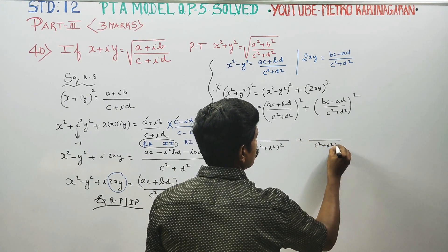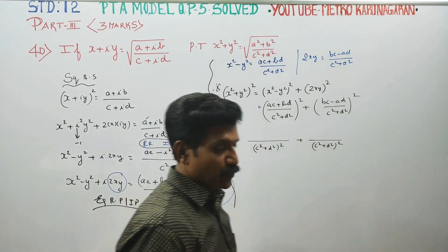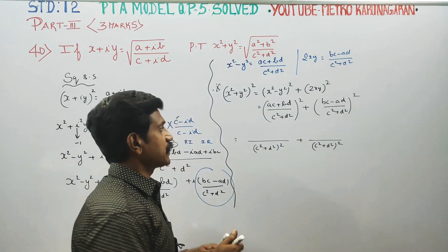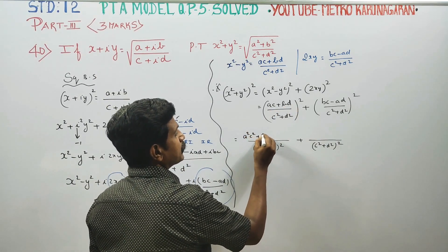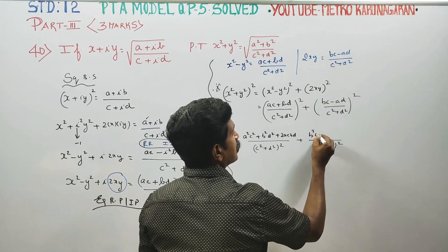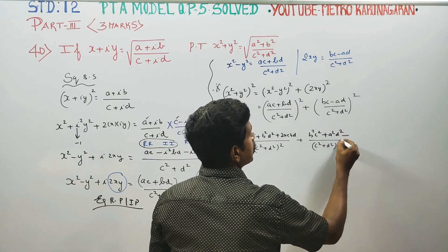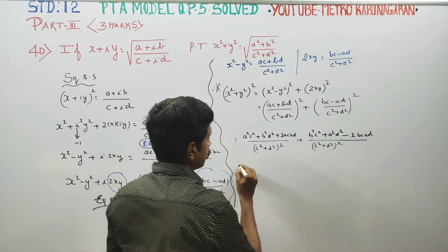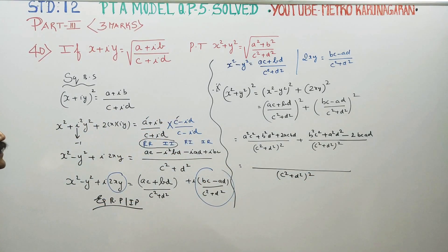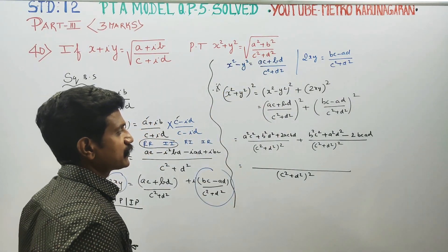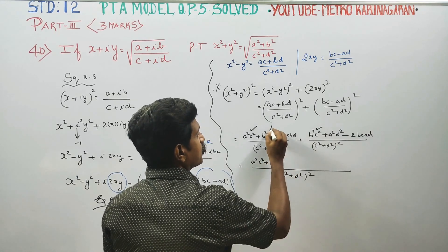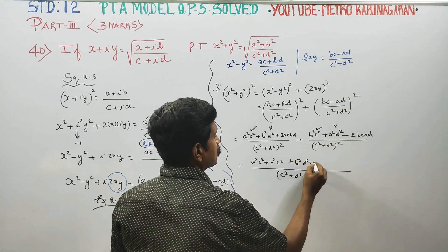The denominator is c square plus d square whole square. The numerator is a plus b whole square. Using the a plus b whole square formula: a square plus b square plus 2ab, and the a minus b whole square formula: a square plus b square minus 2ab. LCM is c square plus d square whole square. Expanding: a square c square plus b square c square, plus b square d square plus a square d square.